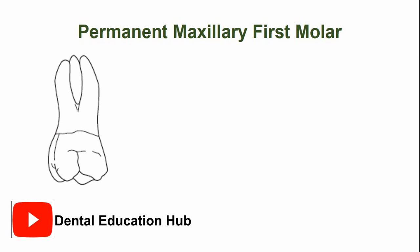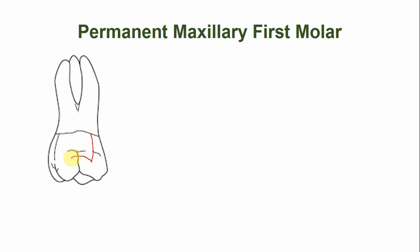This is the mesiodistal outline of the permanent maxillary first molar. In the permanent maxillary first molar, the pulp points are quite prominent. This is the mesial buccal pulp point and this is the distal buccal pulp point. The mesial buccal pulp point is more prominent as compared to the distal buccal pulp point.